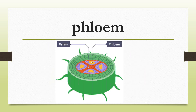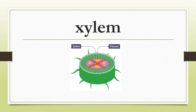Next is phloem. Phloem is located inside of the stem. You can see the phloem inside of the stem, but we cannot see it using our naked eye — we need to use a microscope. Phloem is a part of the stem also, so you can see phloem inside of the stem.